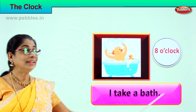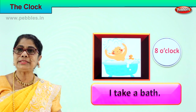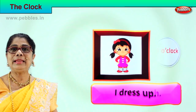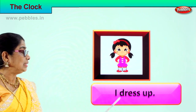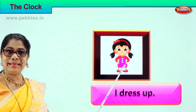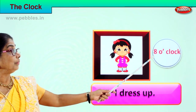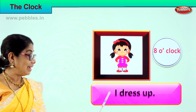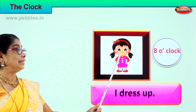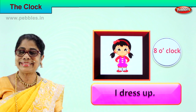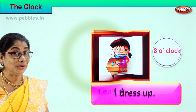You learn to read the time. I take a bath at eight o'clock. Let's go to the next activity in the morning. After bath, what do you do? You dress up! 'I dress up.' At what time? Eight o'clock! I dress up at eight o'clock, and he looks so pretty. Good. You're learning to read the text and the time.